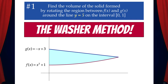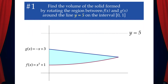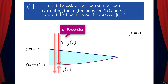That means we need to determine the outer radius and the inner radius. The distance from y equals 5 to the x-axis is just 5, and the distance from the x-axis to f of x is f of x. So the outer radius, big R, is 5 minus f of x.